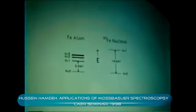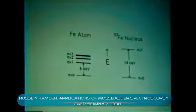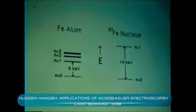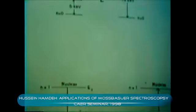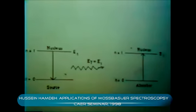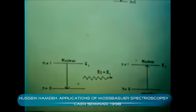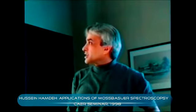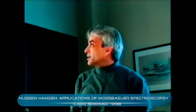Before I go to the Mössbauer effect, I listed the electronic levels of the iron atom and the energy levels of the nucleus of iron. I am going to restrict my talk to iron-57. You have a few isotopes that can be used in Mössbauer spectroscopy, but my talk will be strictly about iron.